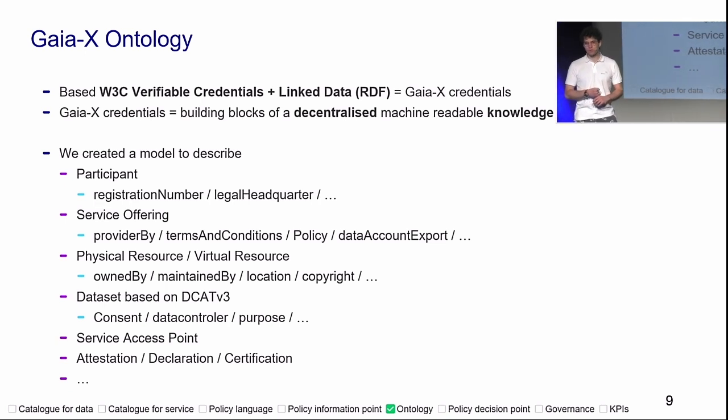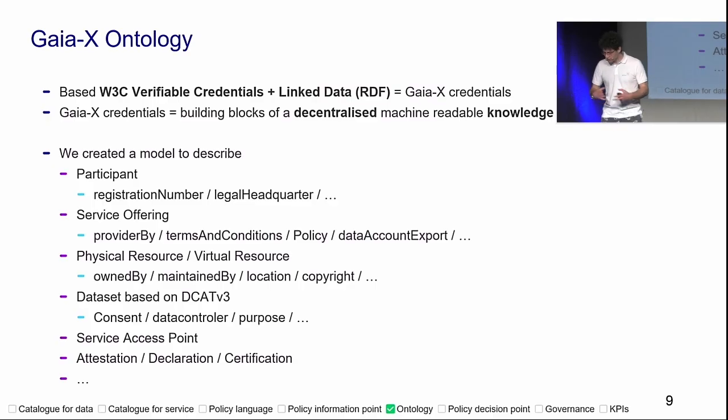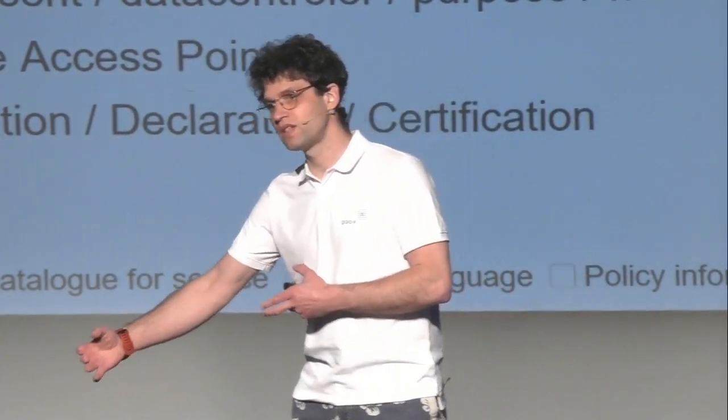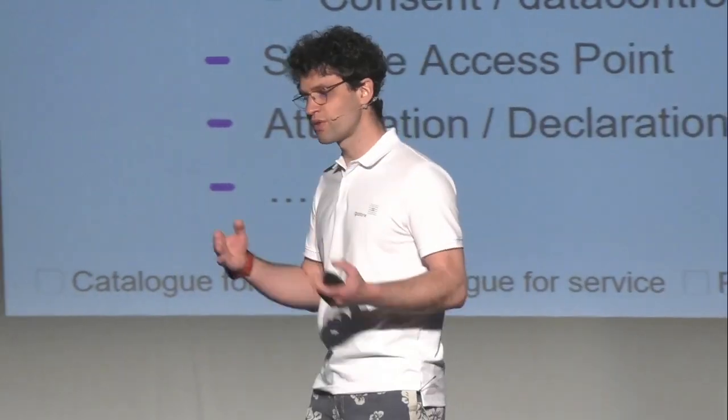Part of the GAIA-X ontology covers participants, service offerings, data resources, physical resources — down to the GPS coordinates of the data center. Copyright and location. We don't want to reinvent the world — there are already plenty of ontologies existing. For data sets, we extend the DCAT v3 ones. There are already ontologies for digital rights and GDPR. Access points, attestation, declaration, certification — and so we have our first checkbox: the GAIA-X ontology.